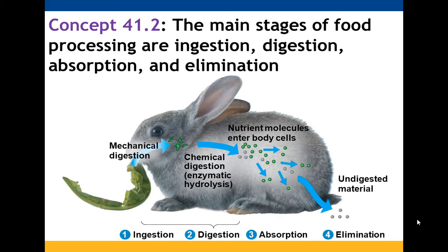The four main stages involved with food processing are ingestion, digestion — where we're going to spend a good chunk of our time — absorption, which is another big one, and finally elimination.